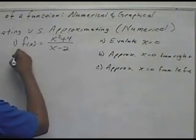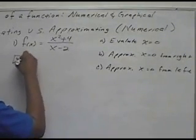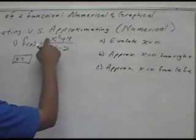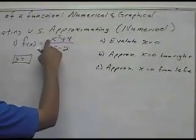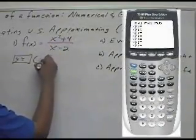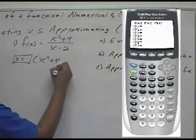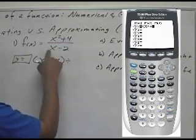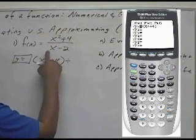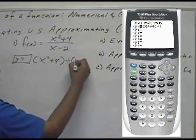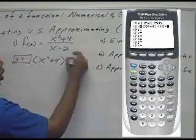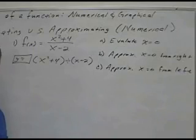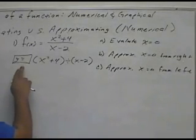On your calculator, go to the Y= button. For the numerator, open a parenthesis: (x² + 4), then close the parenthesis. Then division, and for the denominator, open a parenthesis: (x - 2), then close the parenthesis. This goes in for our equation under Y=.